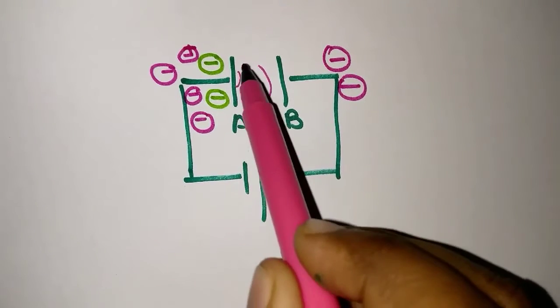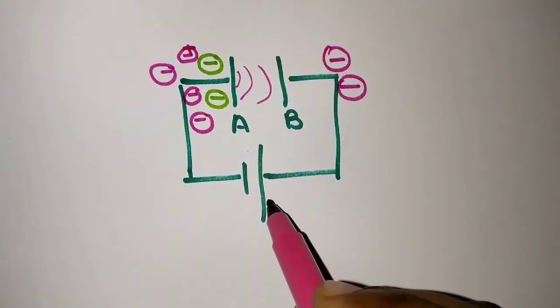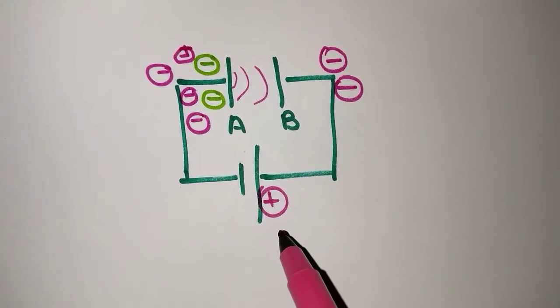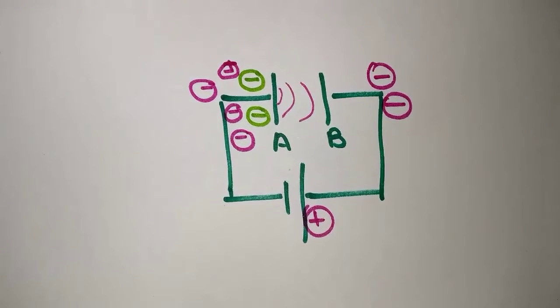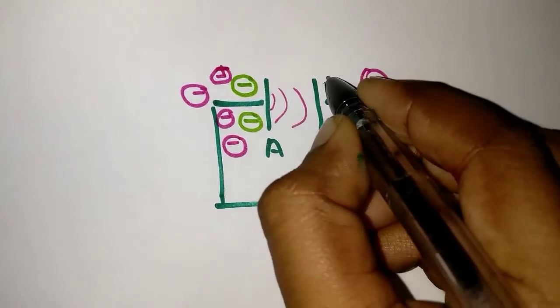This will then put an electrostatic force on plate B which will push the electrons to the positive terminal of the battery. This then leaves a positive charge on plate B.